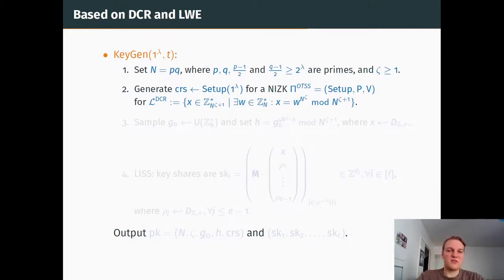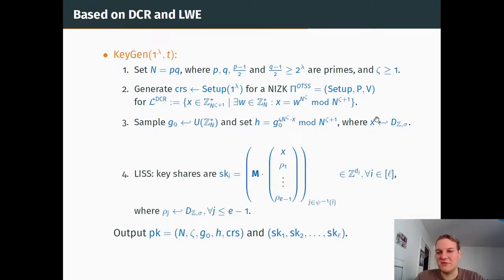To give you the full construction, the idea is to set an RSA modulus with p, q safe primes, and to generate a common reference string for the NIZK for the language of n to the zeta residue mod n to the zeta plus one. Next, we set the public key, which is the couple (g_0, h), and the secret is the small x which is used to build h. Now that we have a secret, we simply share it using the LISS as we have learned to do. We are done, we can output the public key and the key shares.